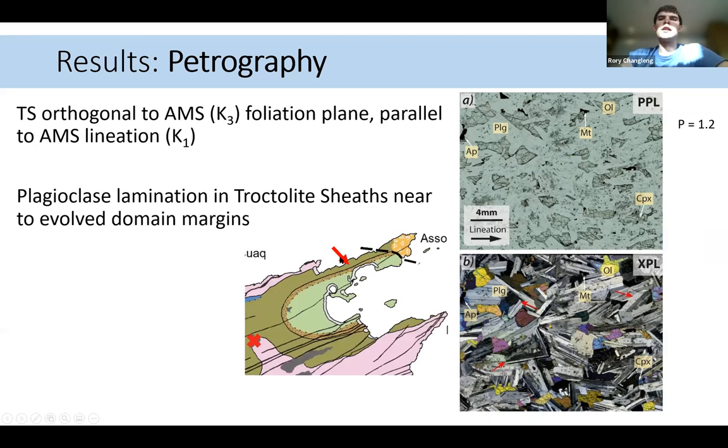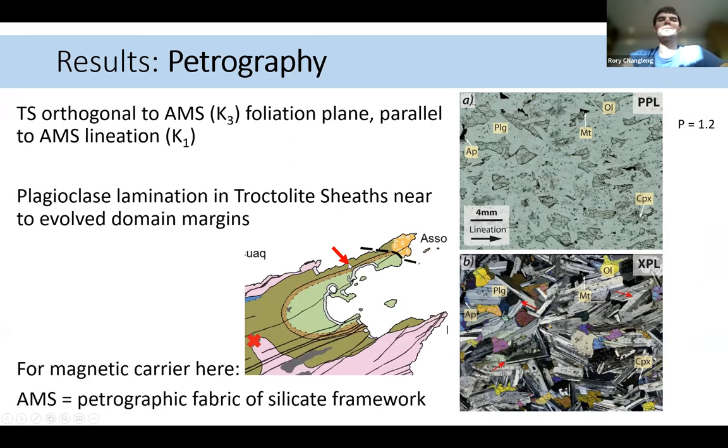So this sample is from just north here within the margin next to this evolved domain margin. And we can see here that the magnetic carrier is reflecting the petrographic fabric of the silicate framework. So this is a proof of concept that the AMS here does reflect the silicate framework, at least in this particular location, which I infer to cover the majority of my area.